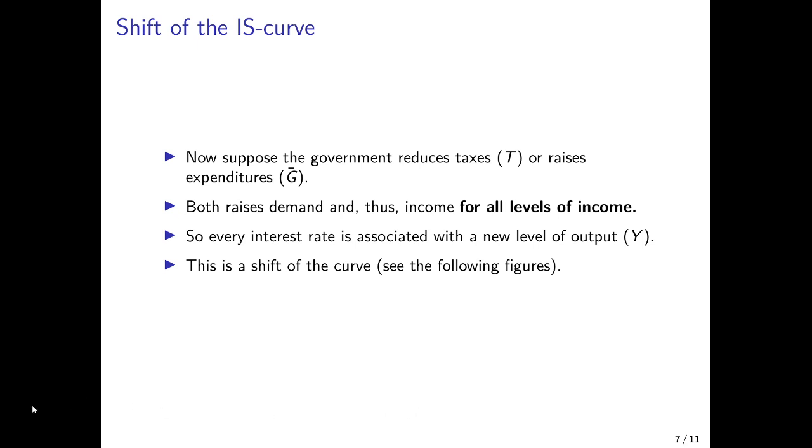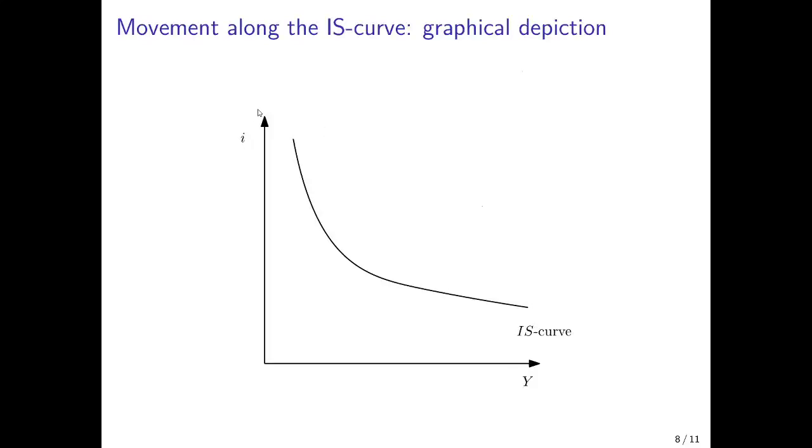We see this in the next figures. Again, we have this IS curve downward sloping in the space of the interest rate and income output. We are in the initial situation with an interest rate of I and an income output level of Y0.